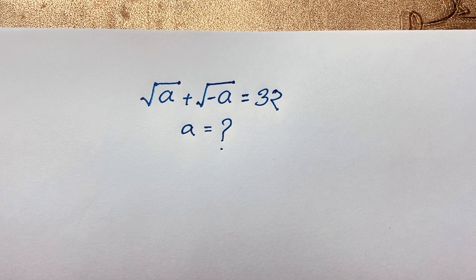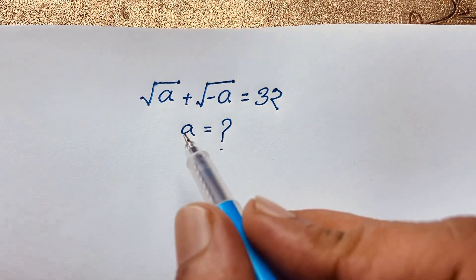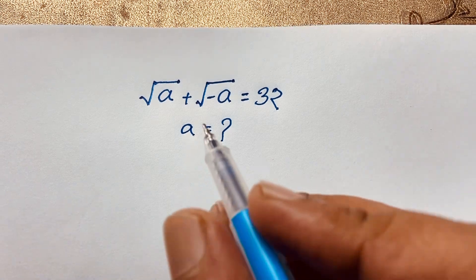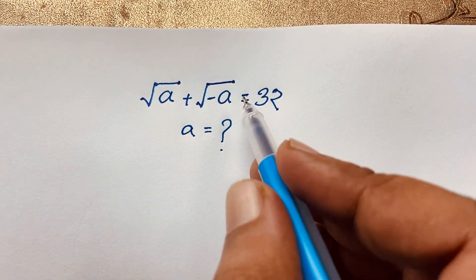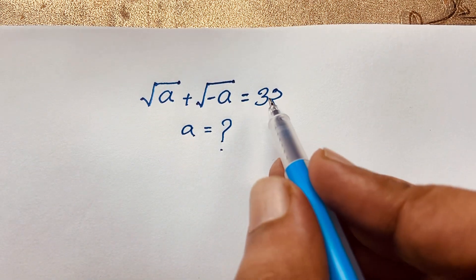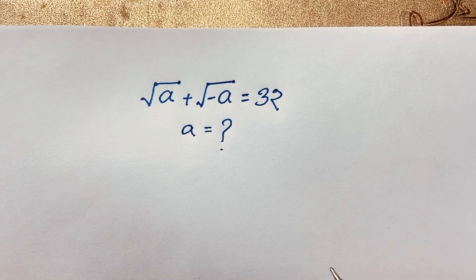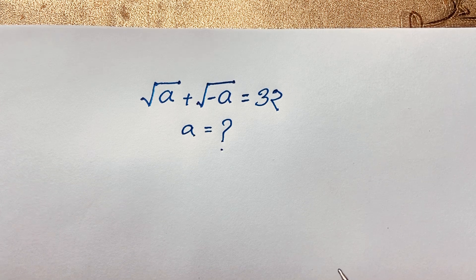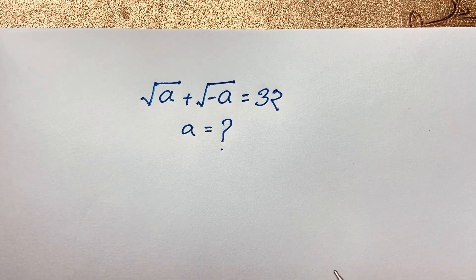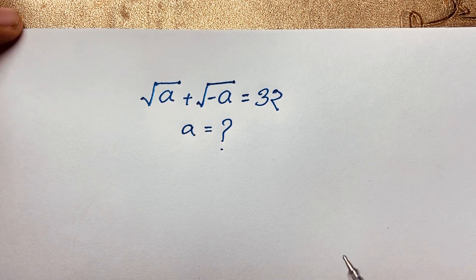Hello everyone. In this video we will solve a nice radical math question. Square root A plus square root negative A is equal to 32. We will find out what is the value of A in this math problem.